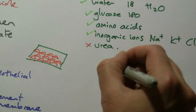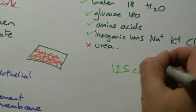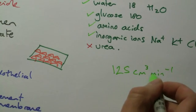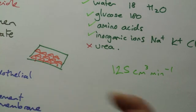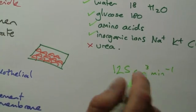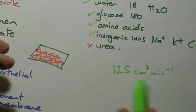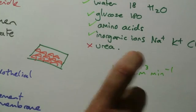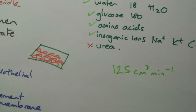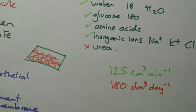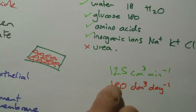If we consider that, we filter through the kidneys 125 centimeters cubed of fluid per minute. To give you an idea, a standard kind of can of fizzy pop, without giving a trade name away, is, what, 330 milliliters. So it's about just less than half a can of liquid per minute. But it all adds up. So over the course of an entire day, it actually works out at about 180 liters per day of fluid goes through your kidneys. Not to suggest that you've got 180 liters of fluid in your body, it's just that it's running through.